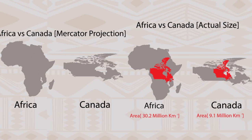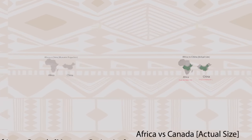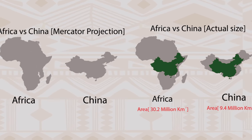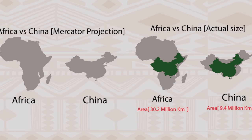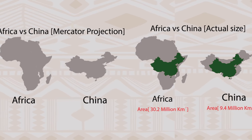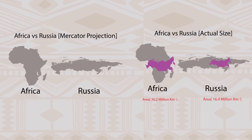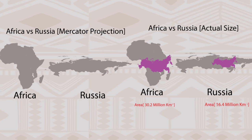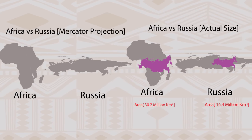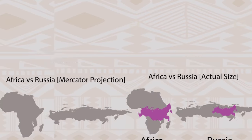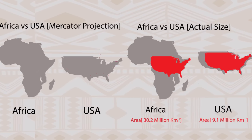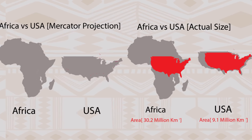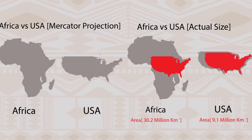What makes the Mercator projection particularly controversial is that it makes Europe and the United States look much larger than they really are, giving them more prominence. Likewise, it takes prominence away from Africa. Some have called it a map made by Europe for Europe, and critics say that this distortion perpetuates imperialist attitudes of European domination over Africa.